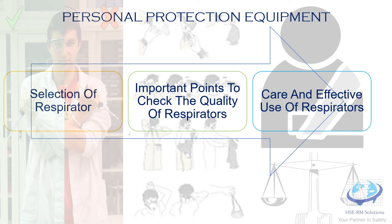The face piece of the respirator should cover the eyes, nose, mouth, and chin, and provide adequate sealing of the face to prevent outside gas entry during head movement, speech, and with dry or moist skin. The face piece is not suitable for a person having a beard unless specifically designed for it. The face piece should be lightweight, comfortable, and have an adjustable and replaceable head harness.